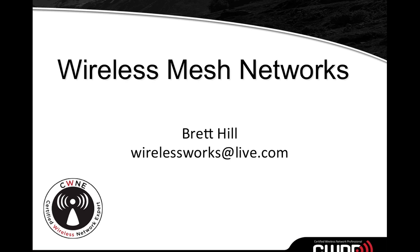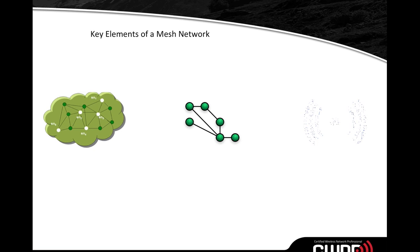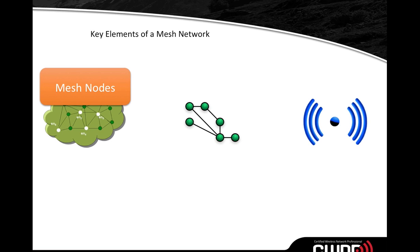This is a quick and basic video on wireless mesh networks and how they operate. First, we'll cover the key elements of a mesh network. There are three things to mention. The first is mesh nodes. In a mesh network, you have what's called a RAP and a MAP. The RAP is the acronym for Root Access Point — the AP that is plugged into a network via cable or fiber connection with connectivity back out to the internet or the data network.